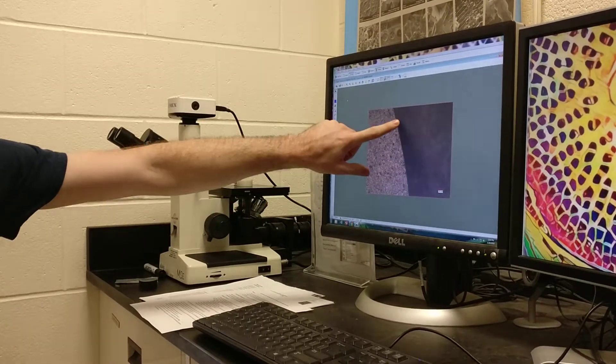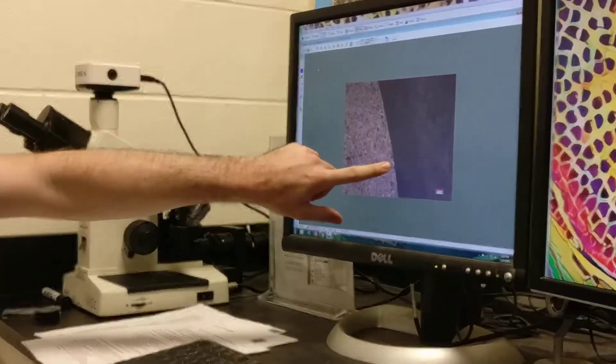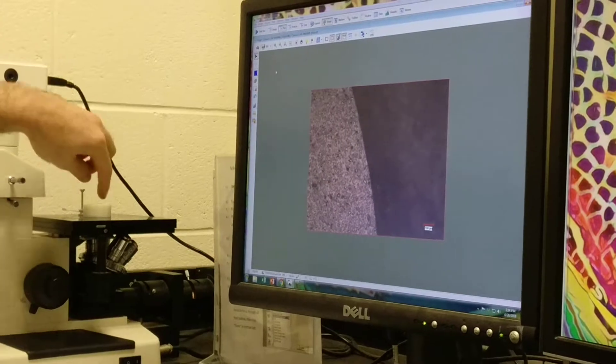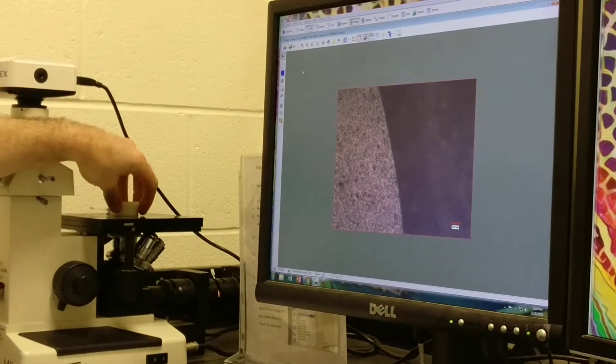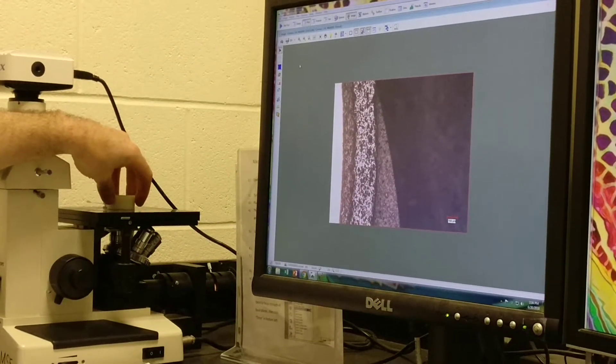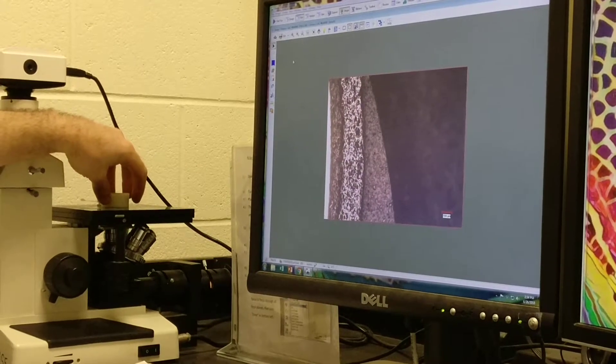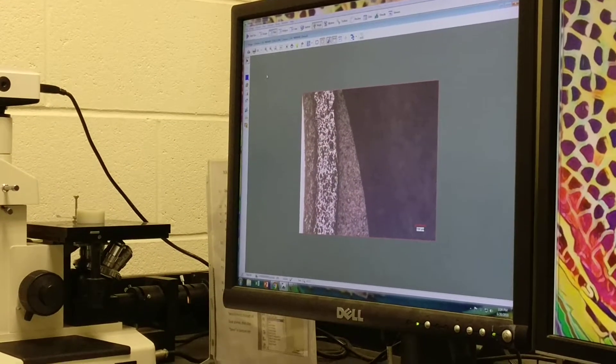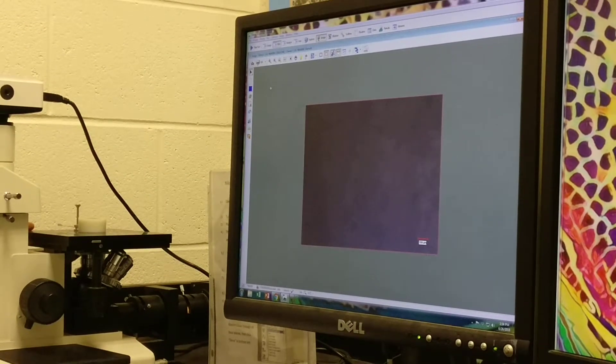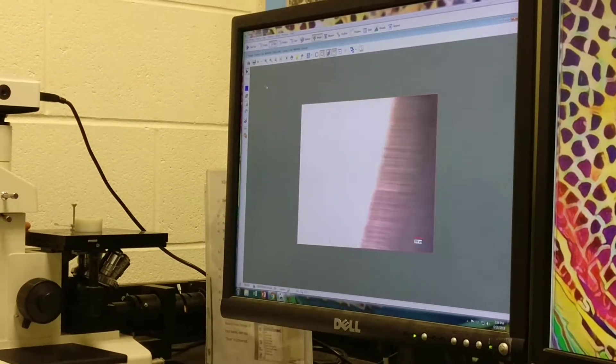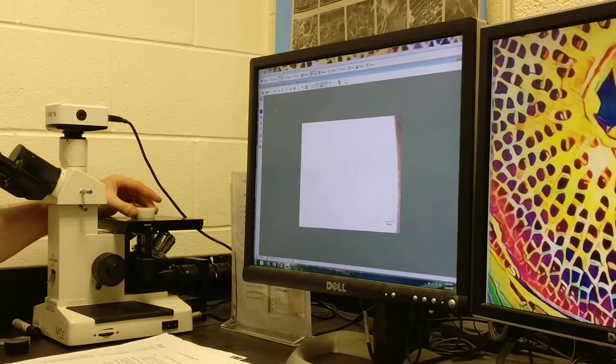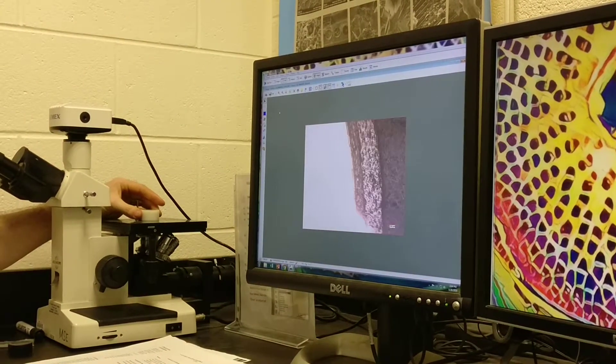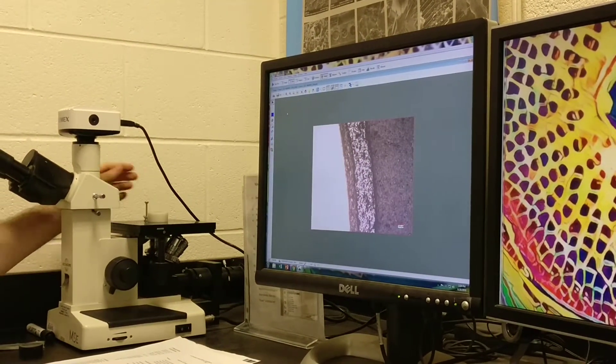We can see the sample here adjusting our fine focus. You may think that this is the edge of your sample, but if I move the sample on the stage, you see how it actually is not the sample. It's actually the edge of our stage, the hole in our stage. If we move that over, now we can actually see the edge of our sample.